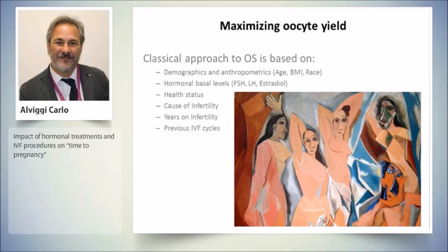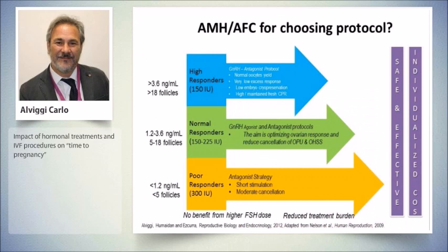Stimulation is a crucial point to try to achieve the goal of maximum number of eggs for a given cycle. What happened in the last years is that the concept of individualizing and personalizing protocols became crucial. Personalizing means having the number of eggs we need, trying to reduce the stimulation burden, doing it in a cost-effective way, and trying to prevent complications including ovarian hyperstimulation syndrome and multiple pregnancies. Profiling patients and understanding the best protocol for having the ideal number of eggs became a trend in literature. This is a classical representation of three categories of patients profiled according to anti-Müllerian hormone and antral follicle count.